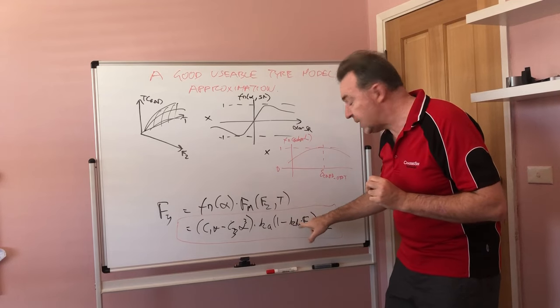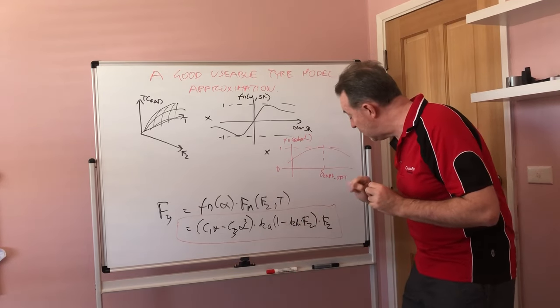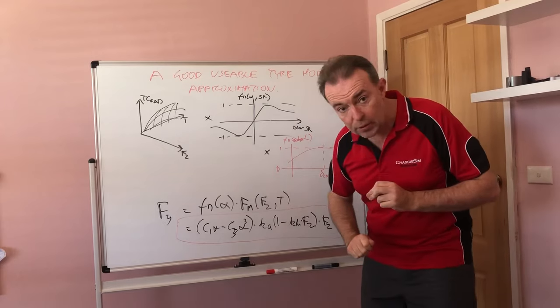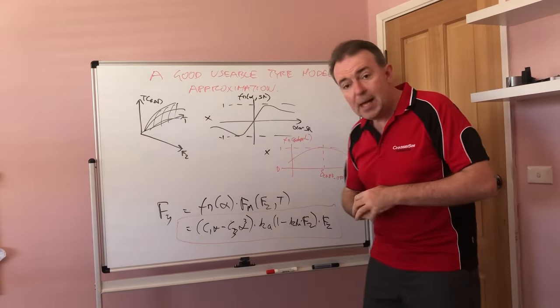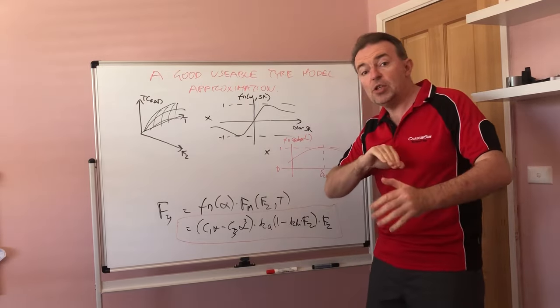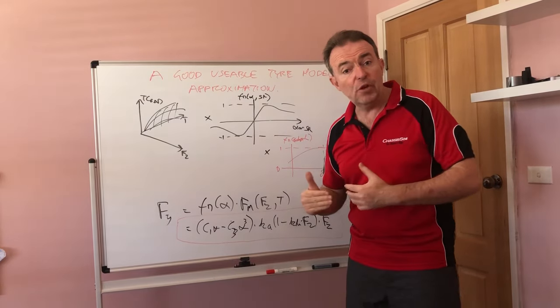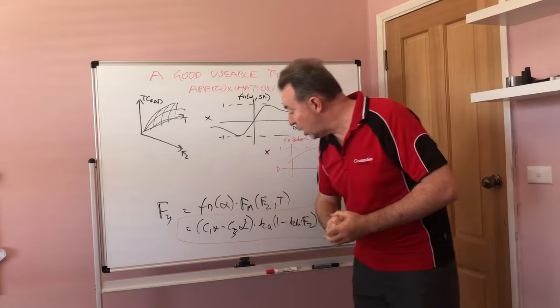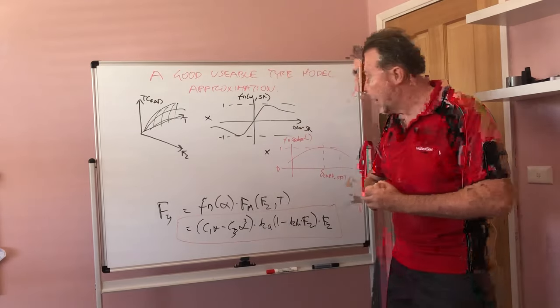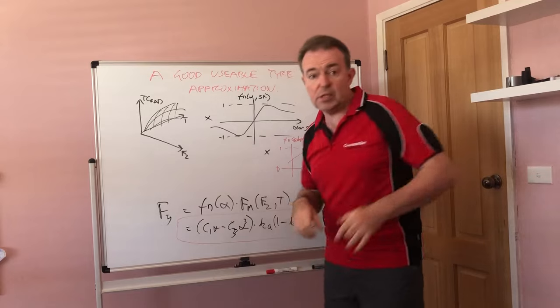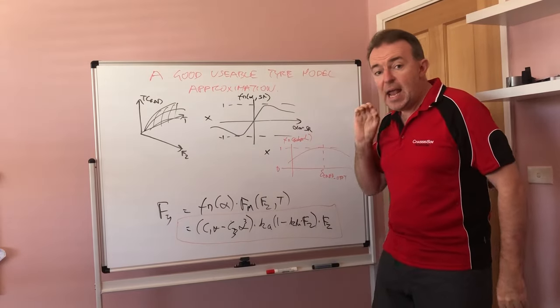You can get an awful way down the road by having a simple polynomial function: C1 alpha minus C3 alpha cubed, multiplied by Ka(1 minus Kb times Fz), all multiplied by Fz where Fz is the vertical load on the tire, Kb is how that initial coefficient of friction drops off with load, and Ka is the initial coefficient of friction of the tire.